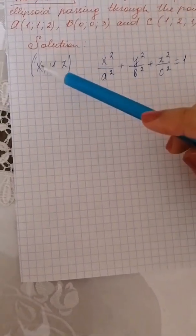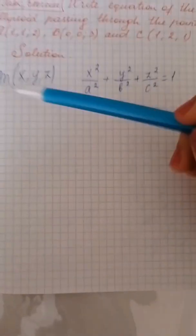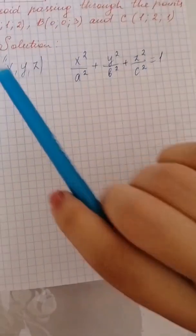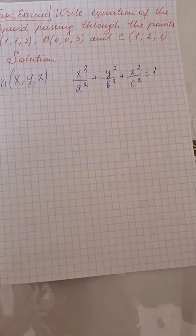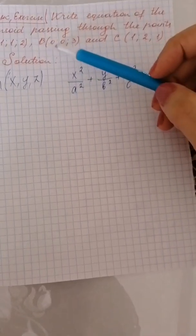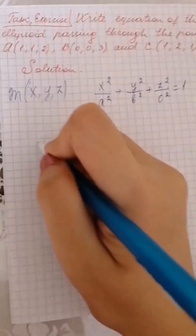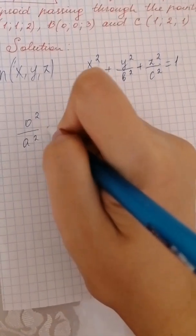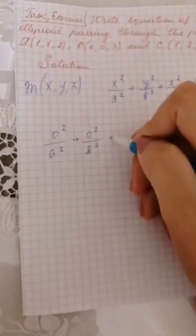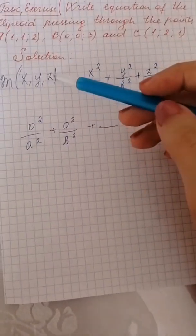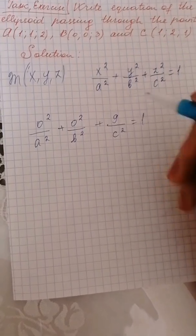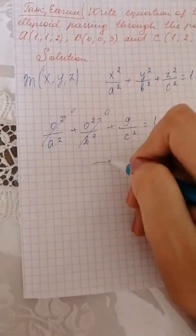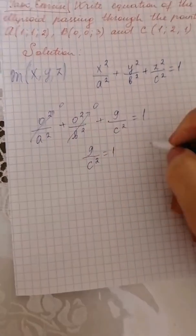In this task, the point M with coordinates x, y, z can be any of the points A, B, or C. First, let's substitute x, y, z by point B (0, 0, 3). The canonical equation becomes 0 squared over a squared plus 0 squared over b squared plus 3 squared over c squared equals 1. This gives 9 over c squared equals 1, so c squared equals 9.